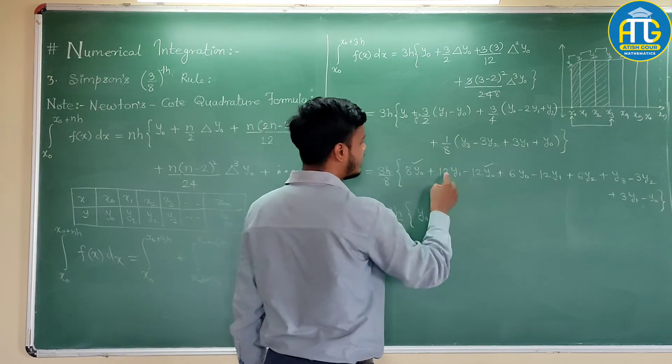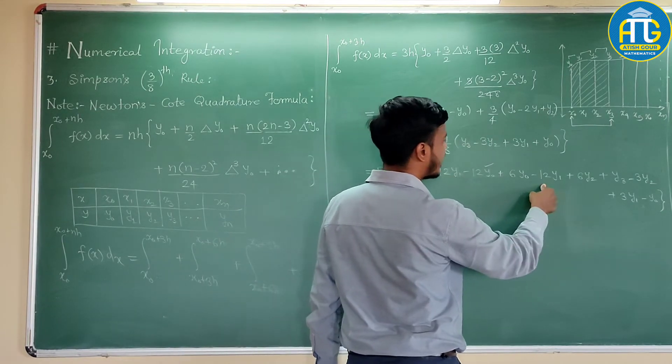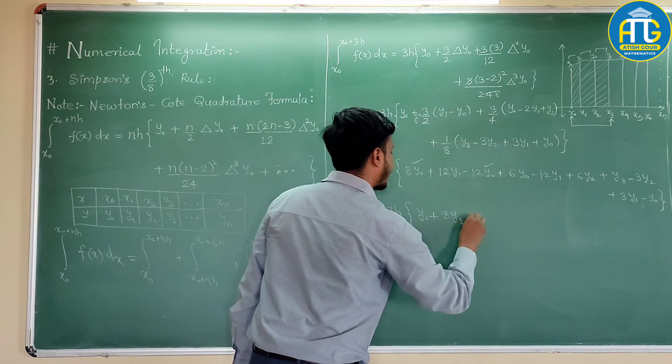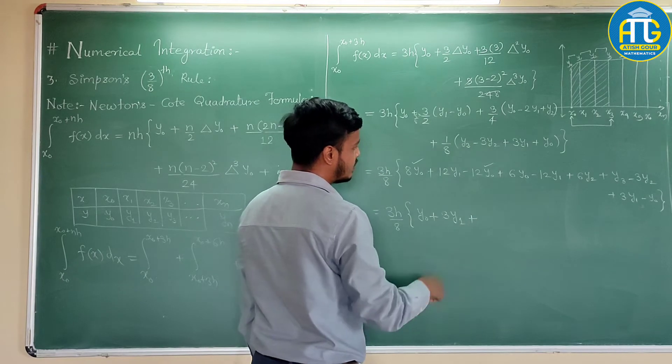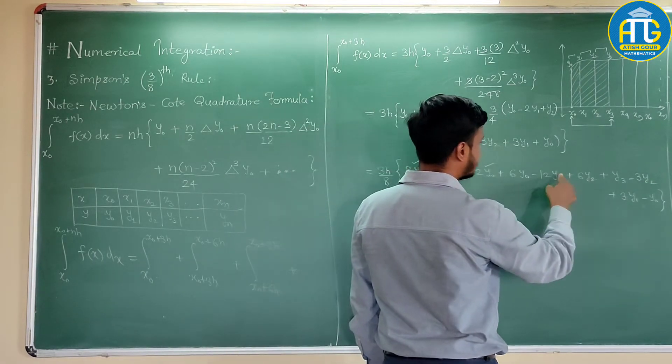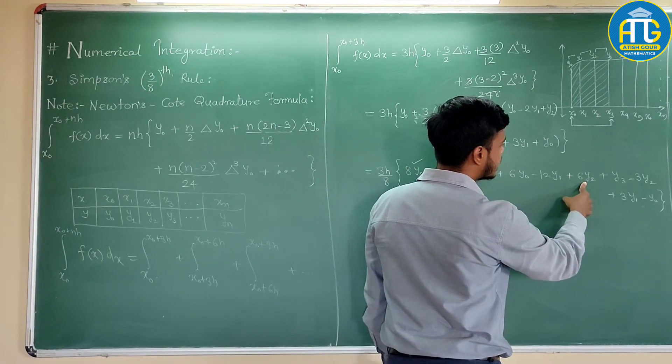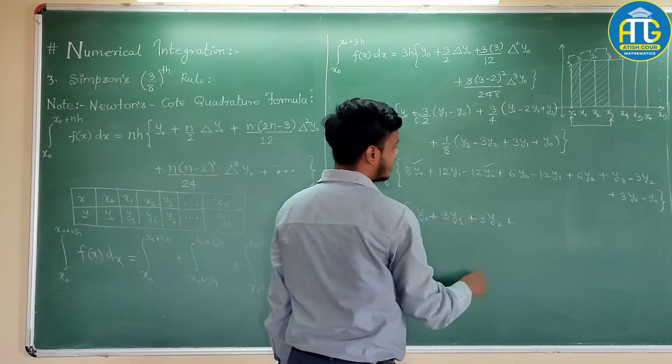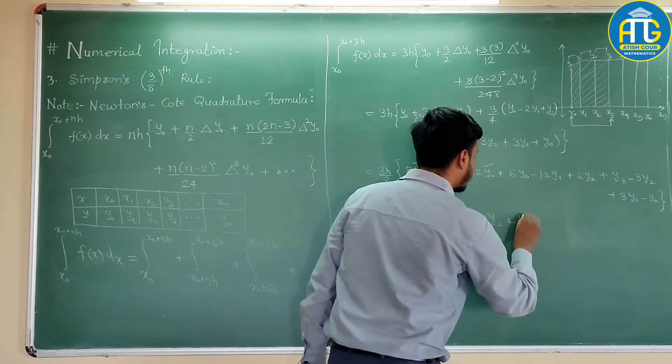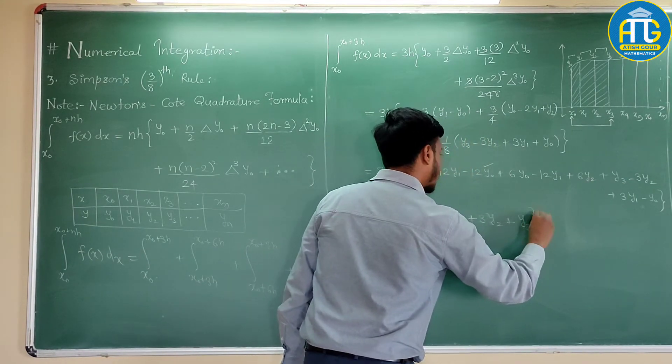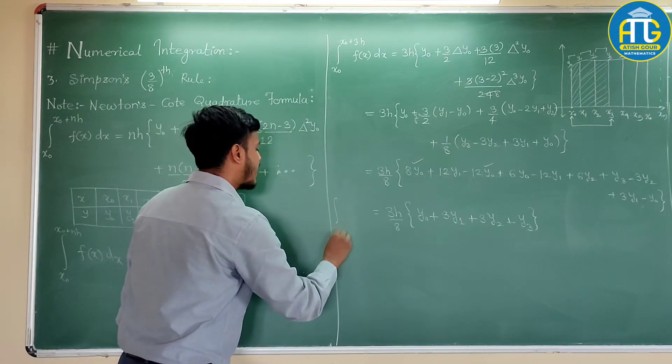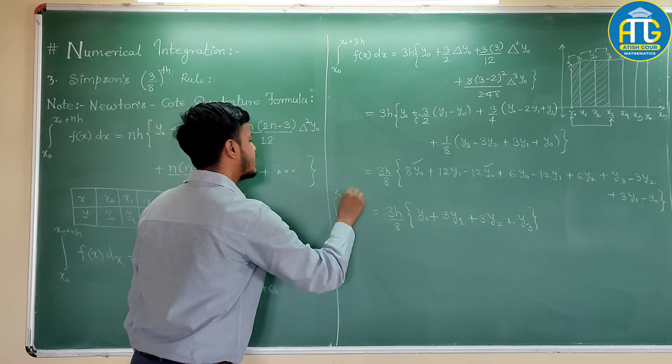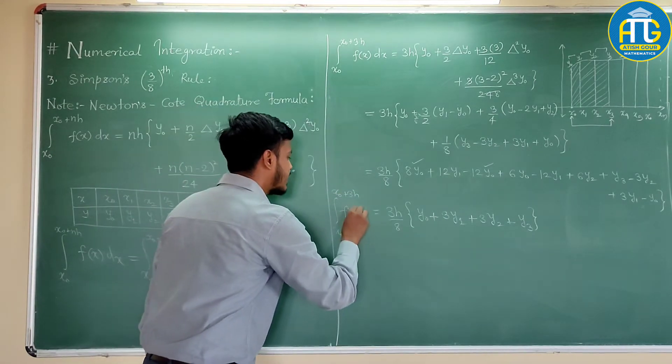Now collect the term of y1, this is 12y1 minus 12y1 gets cancelled, we have 3y1 only. Now collect the term of y2, so here we don't have y2, here we have, so 6y2 minus 3y2, so that is 3y2. And at last, collect the term of y3, that is one term, y3. So we got this integration from x0 to x0 plus 3h, f of x dx.